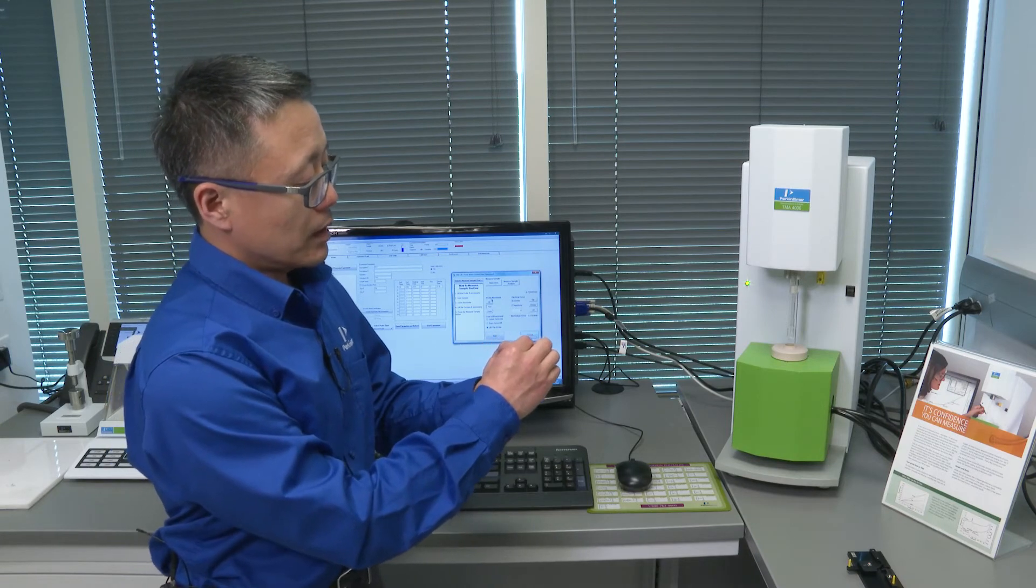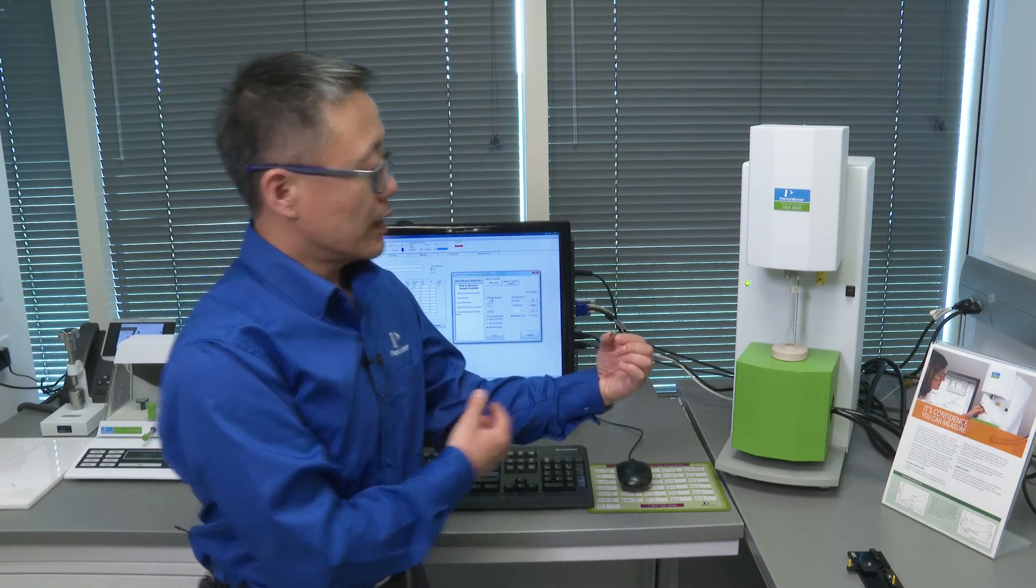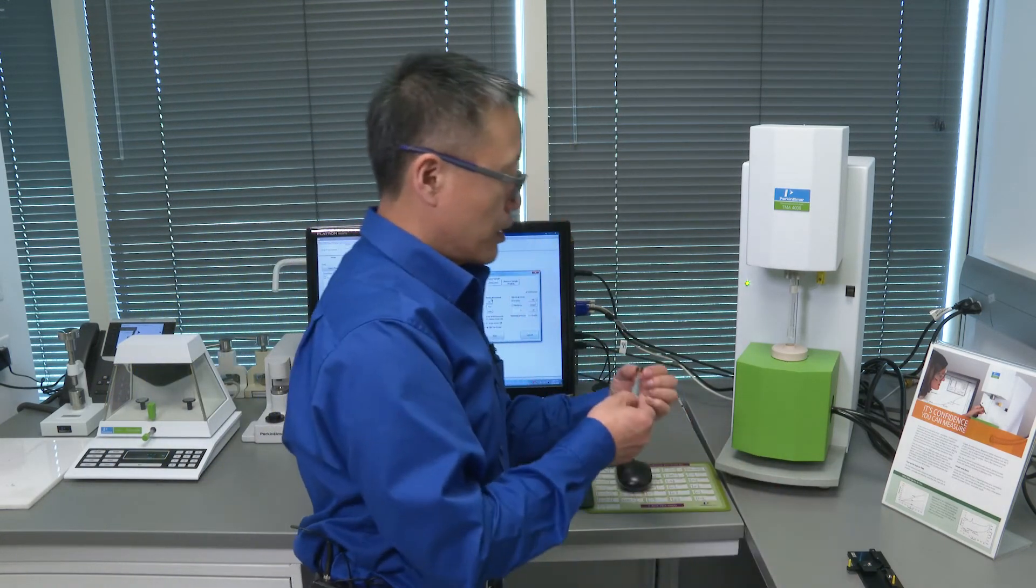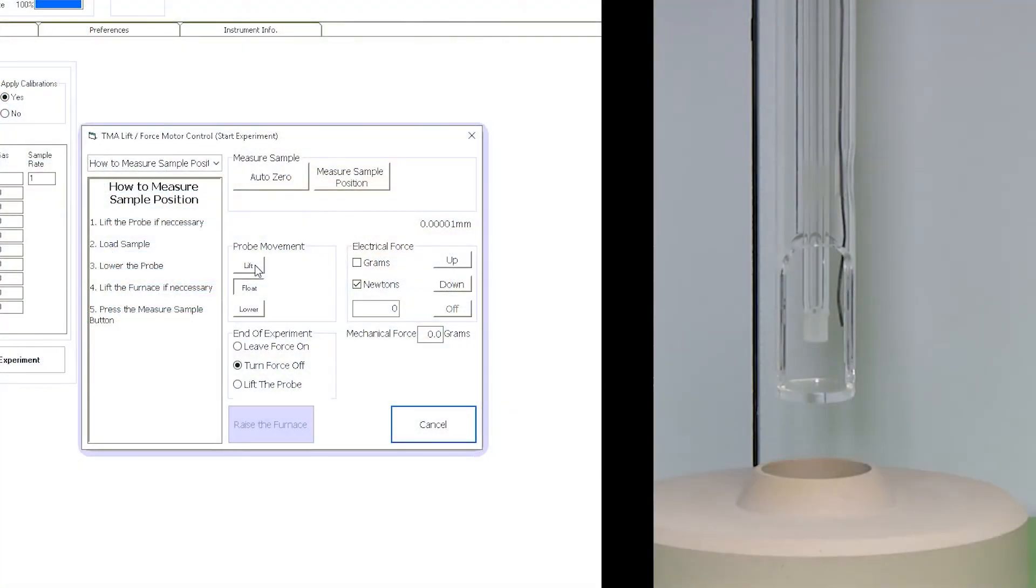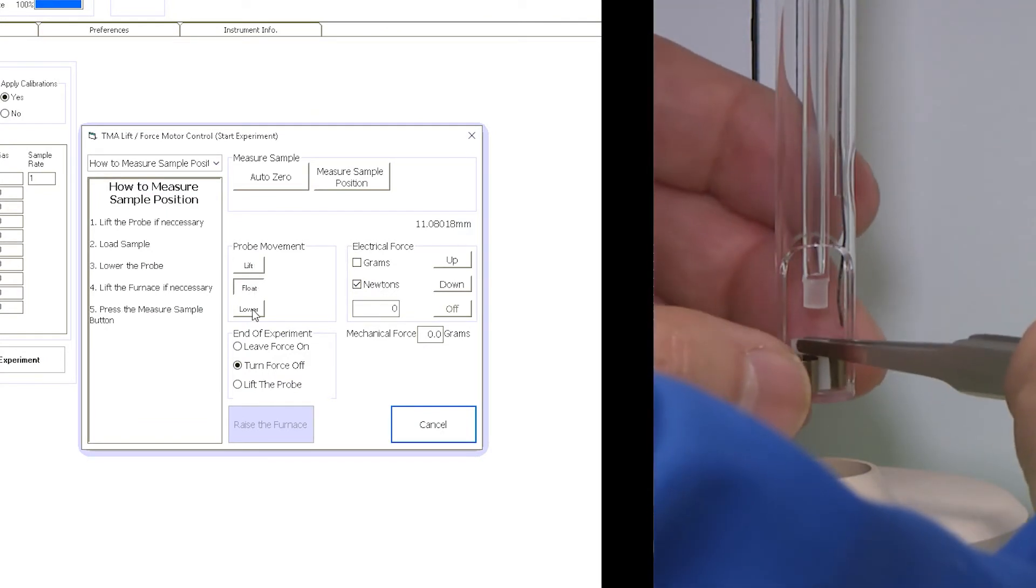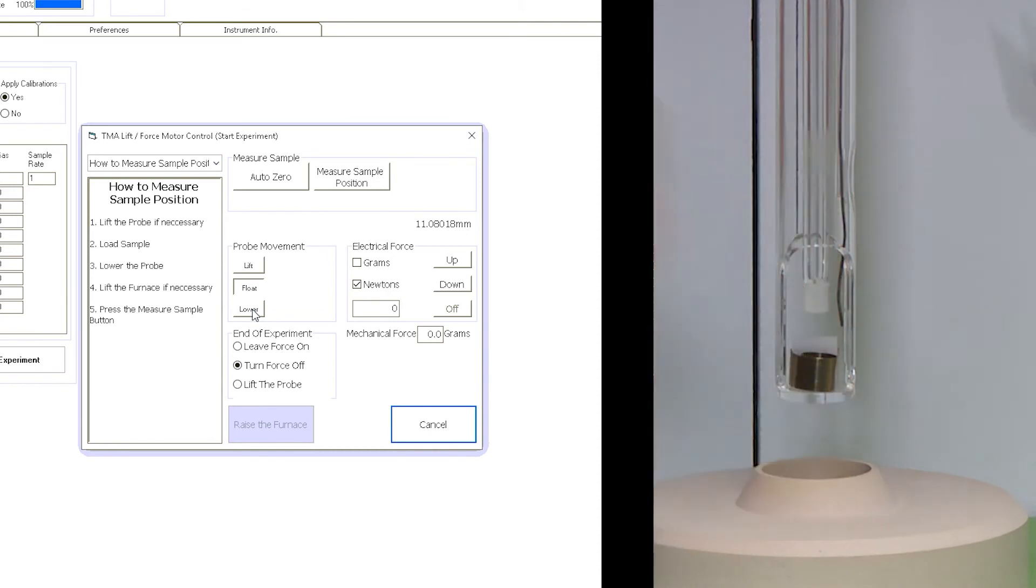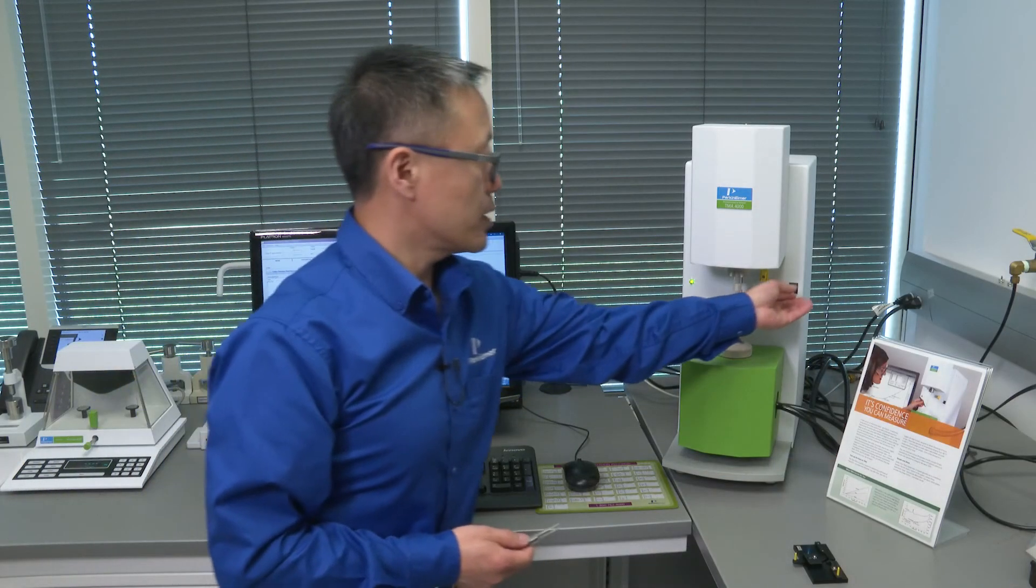So you clip, put a sample in between the clip. And after taring the probe position and lifting the probe, then you can place the sample under the probe like that. Then you can lower the probe, apply a force, and raise the furnace.